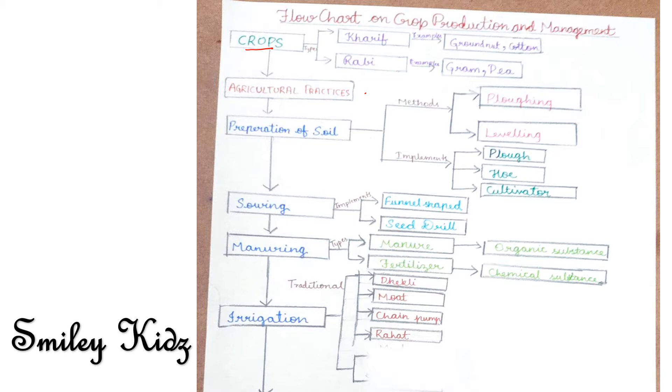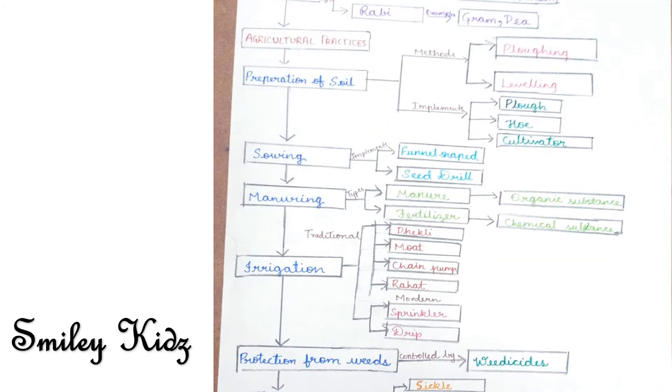The examples of Kharif crops are groundnut and cotton. What exactly are Kharif crops? The crops which are sown in the rainy season are called Kharif crops. Now let's talk about Rabi crops. The crops which are grown in the winter season are called Rabi crops. Examples of Rabi crops are gram, pea, etc.